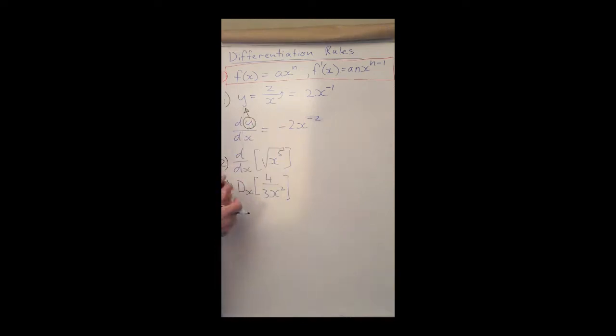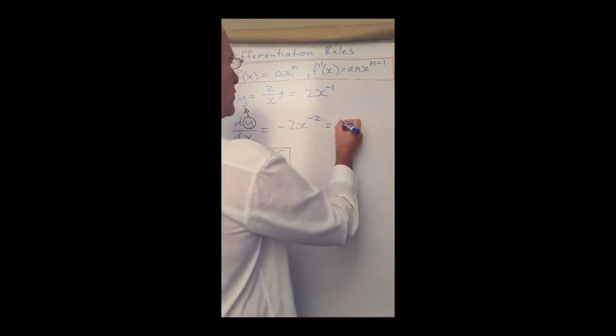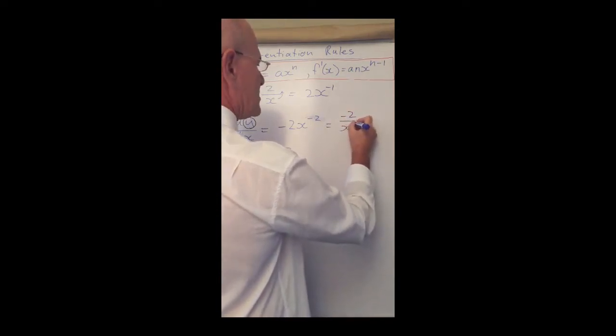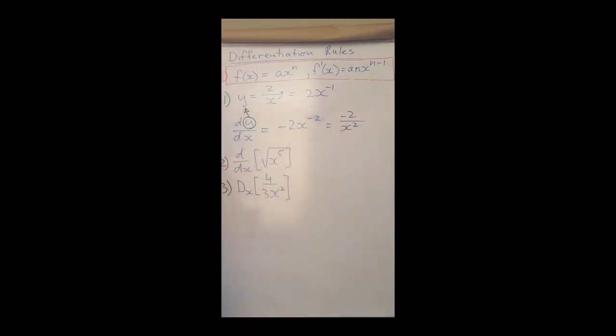Let's rewrite it in positive exponents. What we're going to have here is minus 2 over x squared. So for a hyperbola of 2 over x, to get the first derivative, dy/dx, my answer will be minus 2 over x squared.